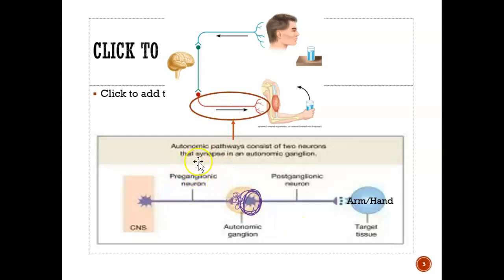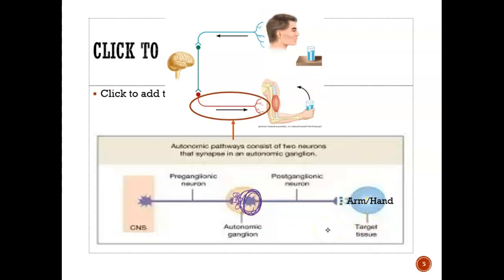The first half is the pre-ganglionic neuron — pre is before the neurotransmitters. The post-ganglionic neuron is the second half — post is after the neurotransmitters — and it sends the signal to the arm to drink. Note that there are also neurotransmitters released at the second junction as well, so those dots need to get released and attach to a receptor so that the arm or hand can be used. So there are two neurotransmitter release points: one in the middle and one at the end.